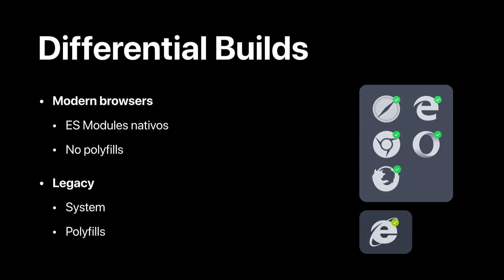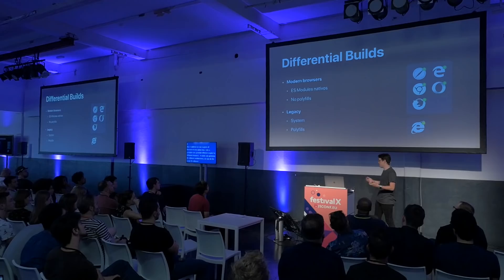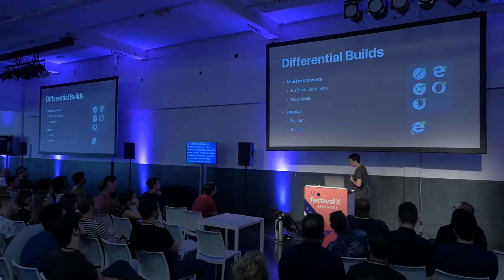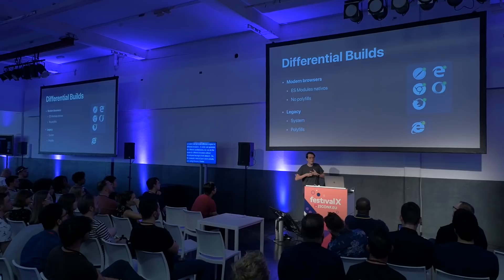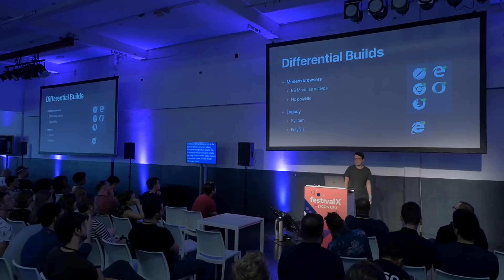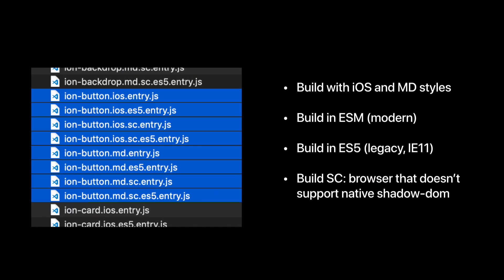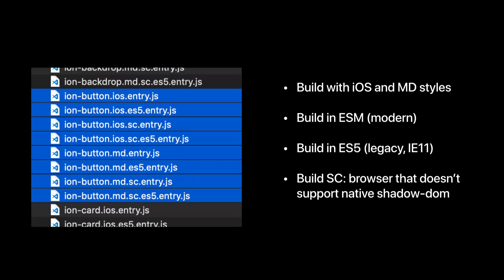For example, the modern build — for users on Chrome, Firefox, or modern Safari — will get the smallest bundle without any polyfill, using modern JavaScript features like native async/await and ES modules. For older browsers like Internet Explorer, you'll get a slightly bigger ES5 bundle. This is an example with the Ion button component — a button with Material Design and iOS styles. The Stencil compiler generates up to eight different versions. But the client only downloads one of them. This way, we cover the whole spectrum of browsers in the most efficient way.